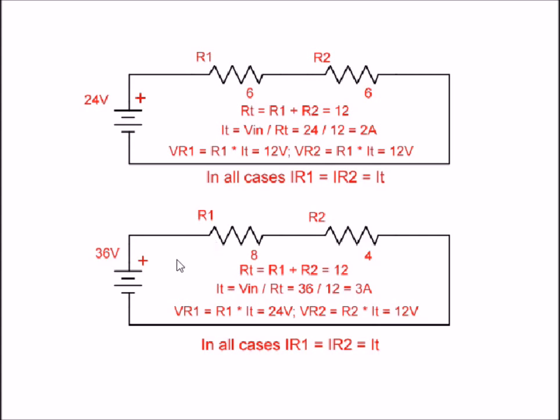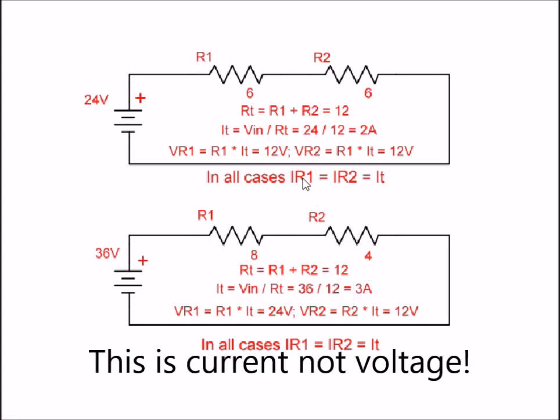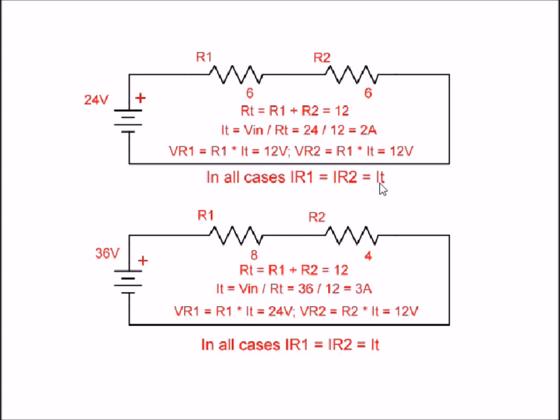Again, the voltage divides proportionally based on the resistance, and note that in all cases, the current through R1 equals R2, which equals I total. Always, that's the way it works.